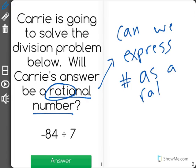Now if you remember, a ratio is, one of the forms of a ratio is a fraction. So here we have negative 84 divided by 7, and what we know about fractions and division is that they are actually the same thing.